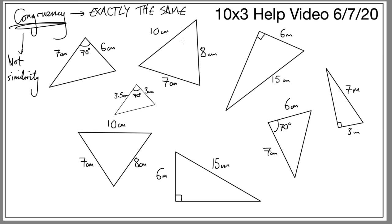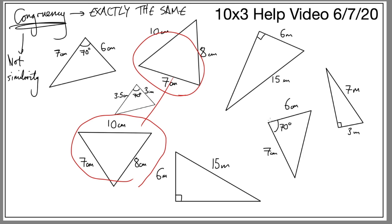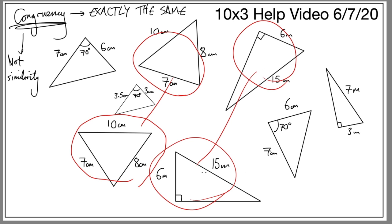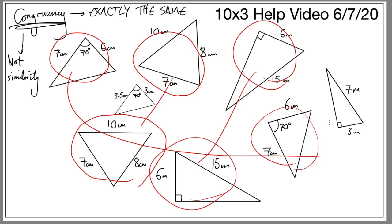Here's a triangle with sides 10, 8, and 7 — this one over here also has 10, 8, and 7, so those two match. This one has a right angle, 6, and 15 — and this one matches it too. And these two with sides 7 match as congruent. But this one looks similar to another but the lengths aren't the same, and this one looks similar to the right-angle triangle but the lengths aren't quite the same either — so those don't match.